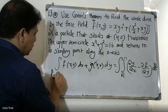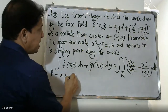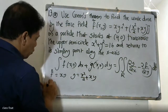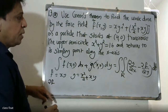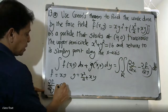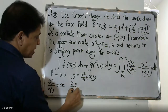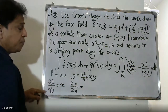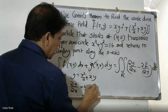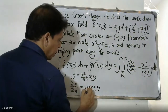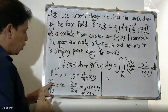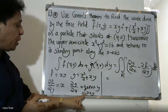Here f = xy and g = x²/2 + xy. Now we compute the partial derivatives: ∂f/∂y — differentiating f = xy with respect to y gives x. For ∂g/∂x — differentiating g = x²/2 + xy with respect to x gives (1/2)·2x + y = x + y.